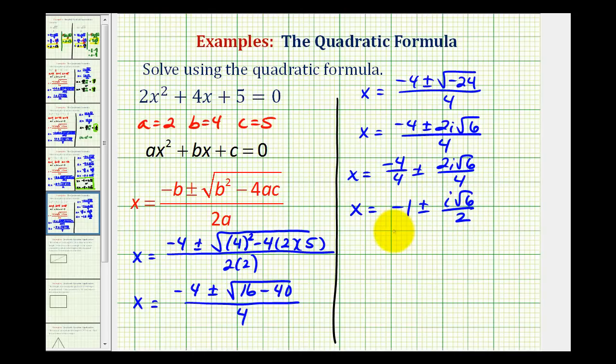So again, we have two complex solutions. One is x equals negative 1 plus i√6 divided by 2. Or we have x equals negative 1 minus i√6 divided by 2.